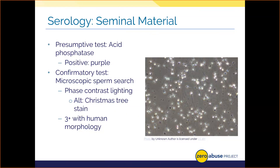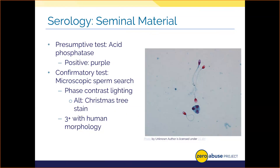If the lab doesn't have expensive phase contrast capabilities, they could use the Christmas tree stain technique. We use two color-contrasting stains — a red and a green. The green stain binds to cellular components without DNA, like the tail or flagellum of the sperm, while the red stain binds to the part with DNA — that head and acrosomal cap. The result is a red head and green body of the sperm for visualization.